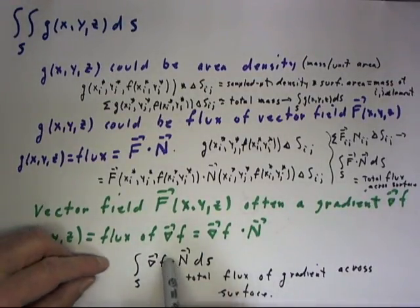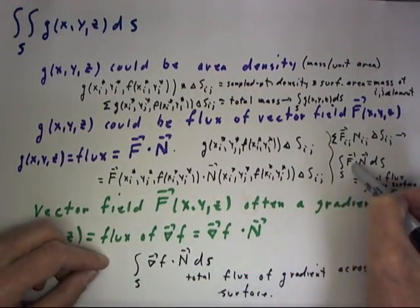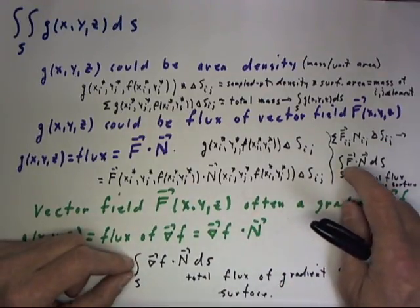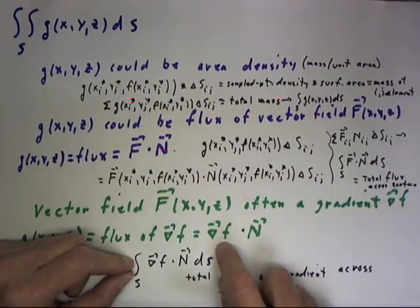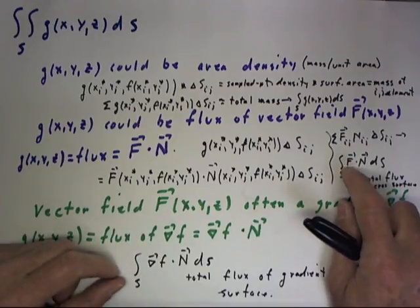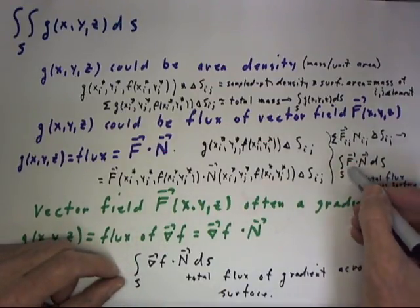This integral is actually just a special case. This function could be any vector function—it doesn't have to be the gradient of a scalar field. As we've seen before, if this function is the gradient of a scalar field, then we have a conservative field, and there are certain conditions that apply to conservative fields.